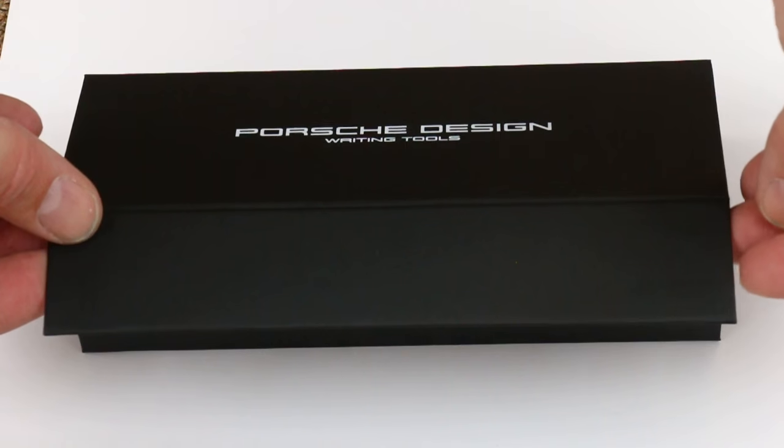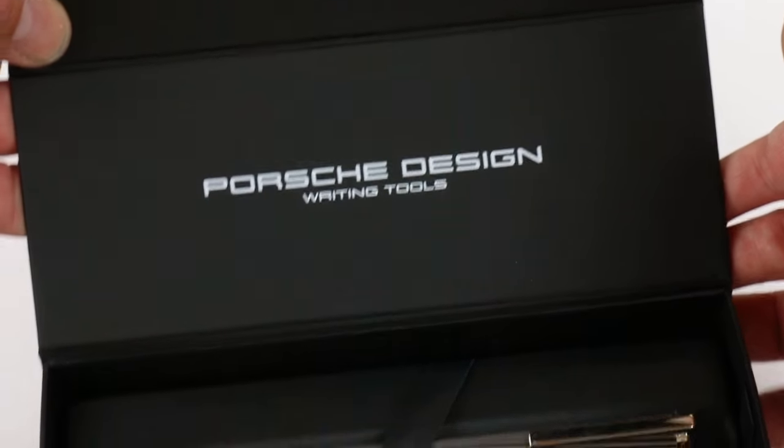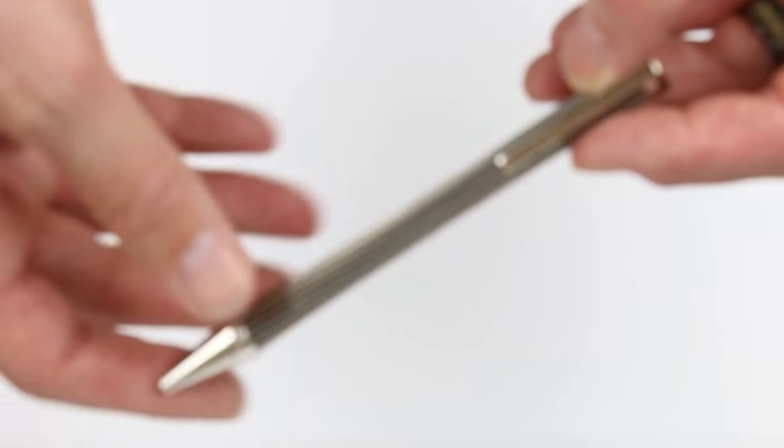That lid is held on with a little magnet there. It swings open. The Porsche Design logo is printed on the underside of the box lid once again, and of course we have the Porsche Design Mikado ballpoint pen.